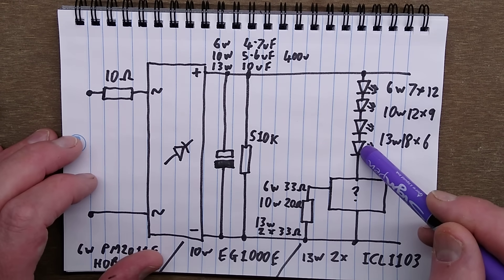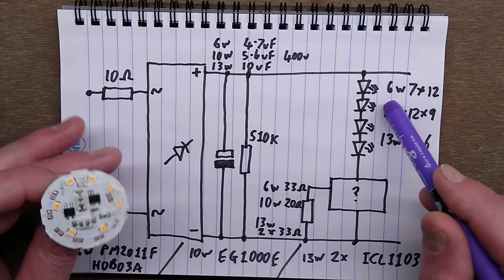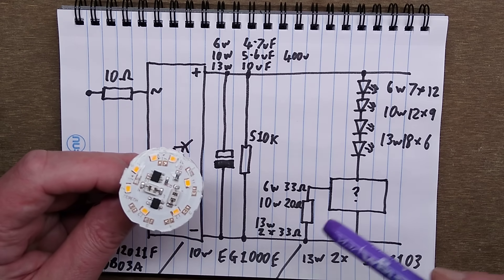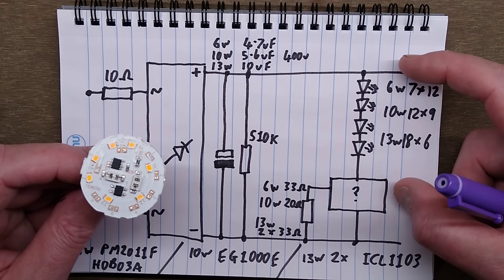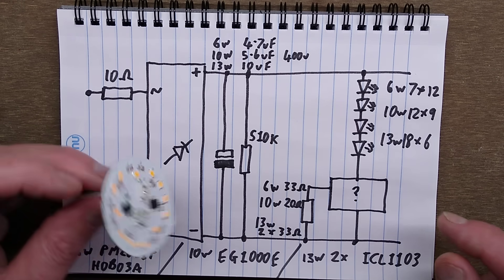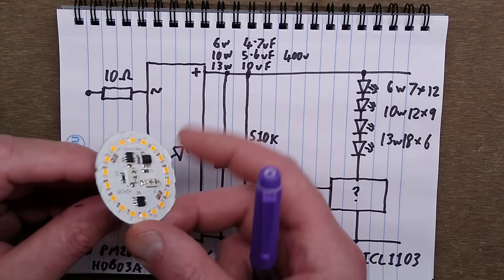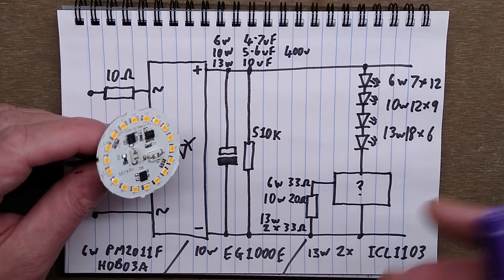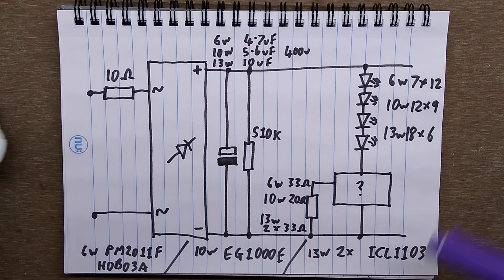The LEDs are different for each lamp. In the case of the 6 watt one, it has 7 chips, which I've now uncovered - the silicone was over them, very messy. I reckon each one will have 12 chips in it, because they usually add up to near the peak mains voltage so they drop as little as possible over the linear regulator. The 10 watt one has 12 nine-chip LEDs, and the 13 watt one has 18 six-chip LEDs. This is based on roughly dividing by about 300 volts, then 3 volts per LED gives a rough value. That fits with how they configure these chips.